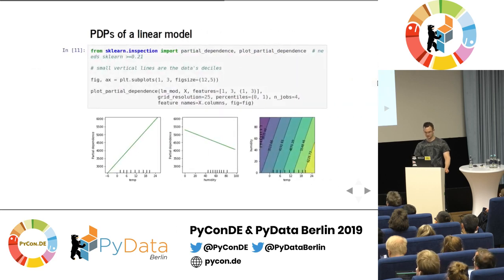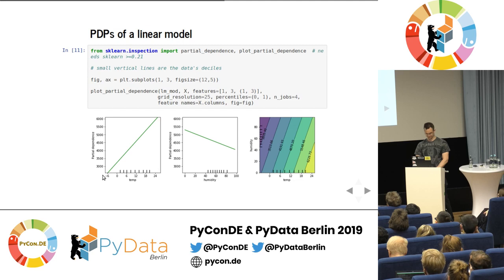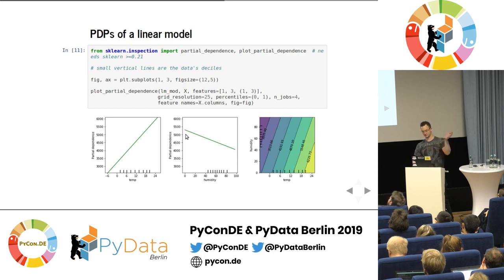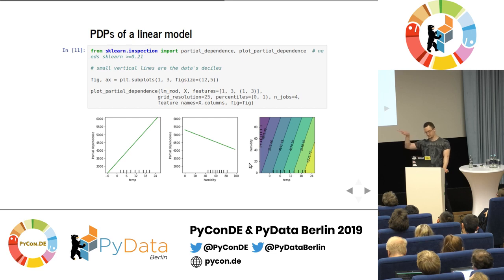This gets more interesting for continuous variables. Scikit-learn has had an inspection module for this since version 0.21. For a linear model this is simple — you look at the effect of temperature and of course you get a line. At zero degrees Celsius you rent out around 3,500 bikes; when it gets really warm, around 6,000. The humidity has a negative effect. The scikit-learn function can also give you two-dimensional graphics — a 2D plane with temperature on one axis and humidity on the other, showing how the predicted value rises as temperature grows and humidity falls.